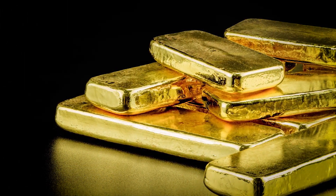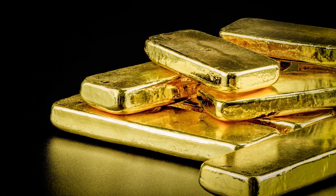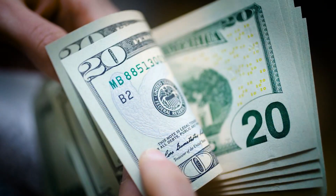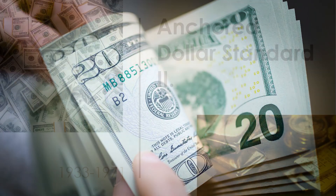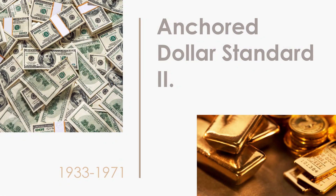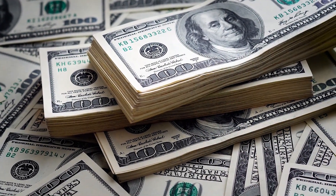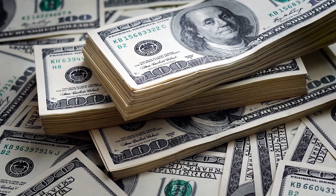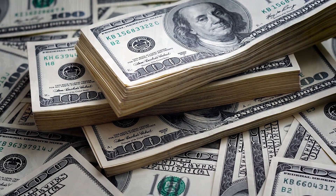Britain abandoned gold in 1931, followed by America in 1933 after devaluing the dollar. So the tripartite monetary agreement was established in 1936, creating a new kind of dollar standard, but the dollar was the only currency anchored to gold, and all other countries in the system kept their respective currencies backed to dollar only. The system lasted from 1936 to 1971.